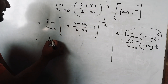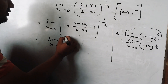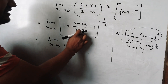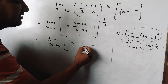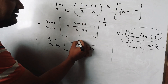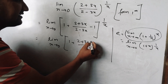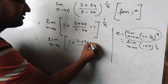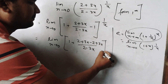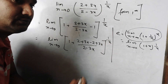We need to do the limit as x tends to 0. We rewrite using LCM: the LCM is 2 minus 3x. We multiply by (2 plus 3x) to the power (1 upon x).